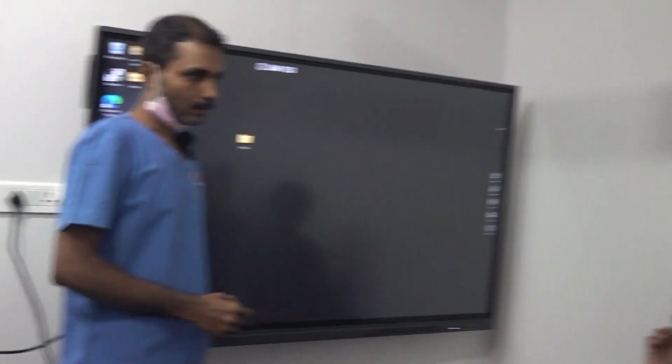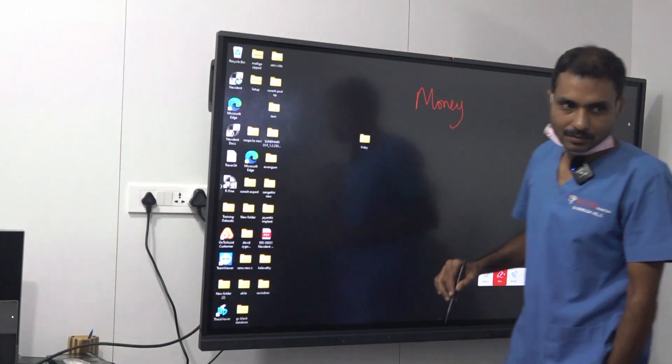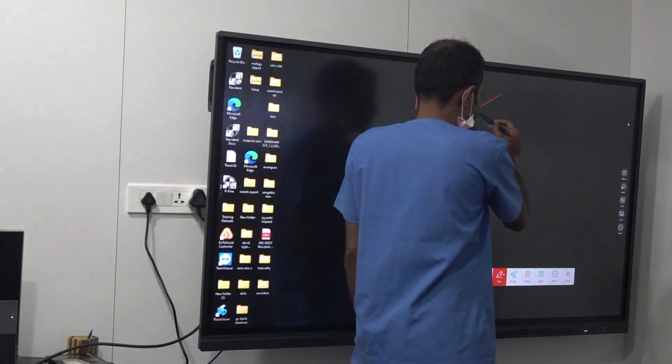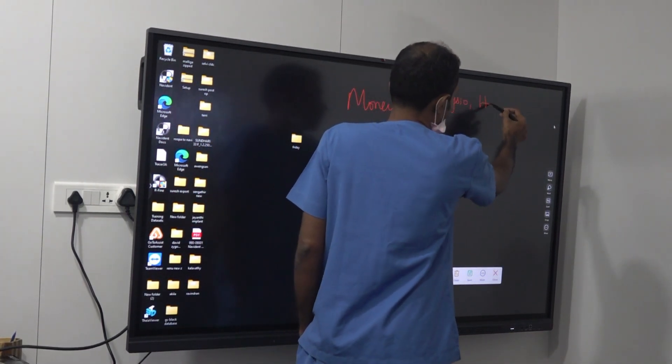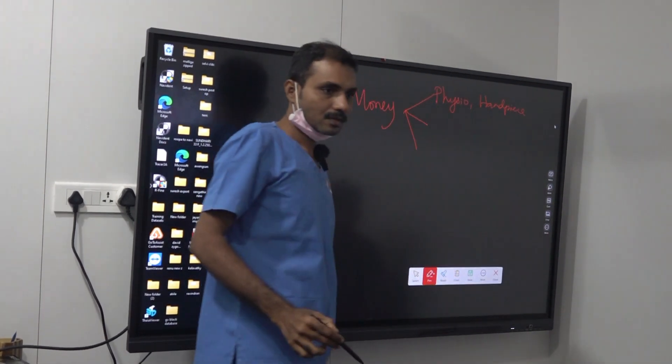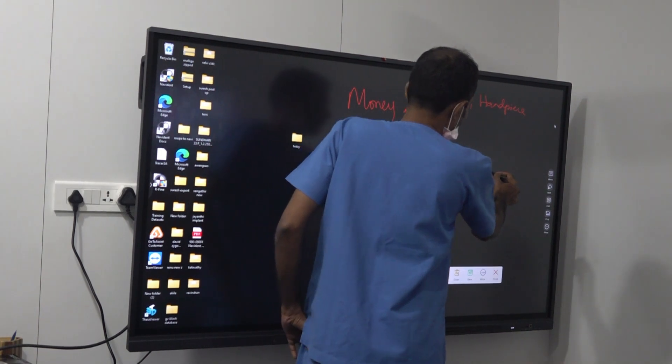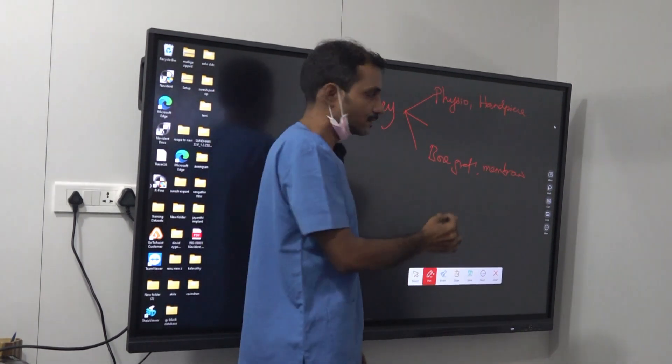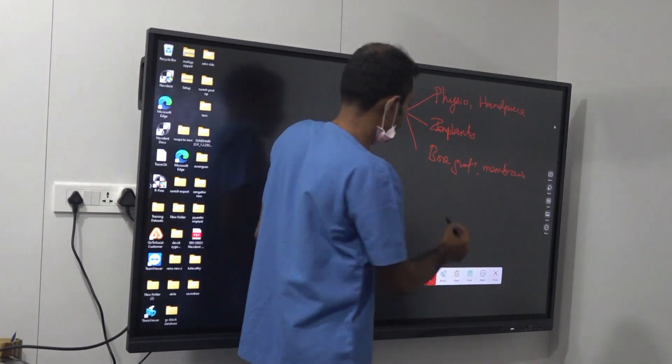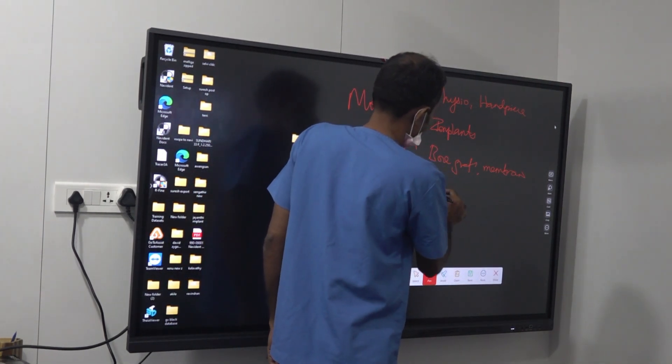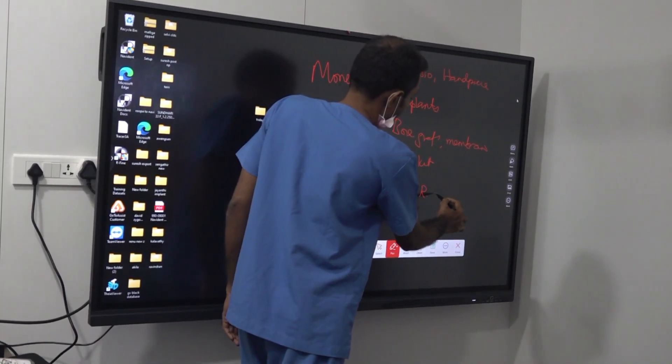In implantology, what all do we need? First thing we need is money, because you need to buy a lot of things. One is your dispenser with implant armpits, bone grafts, membrane, then implants, implant kits, sinus lift kit, and ridge expansion.